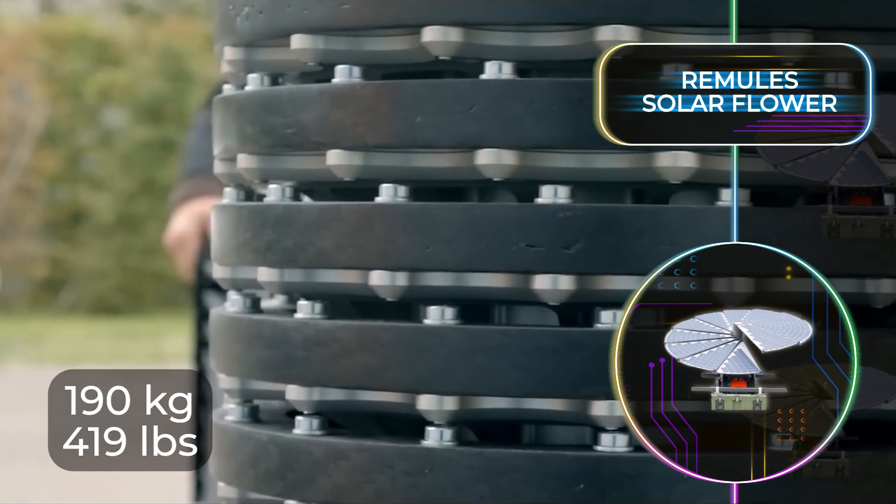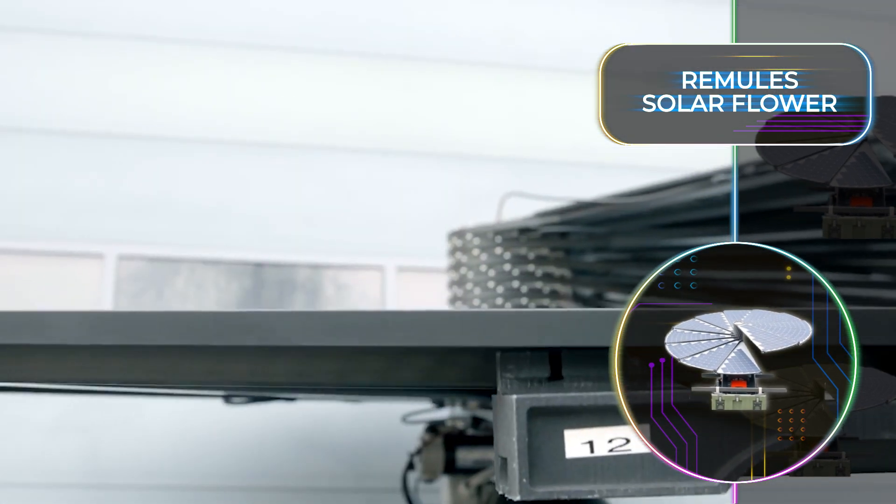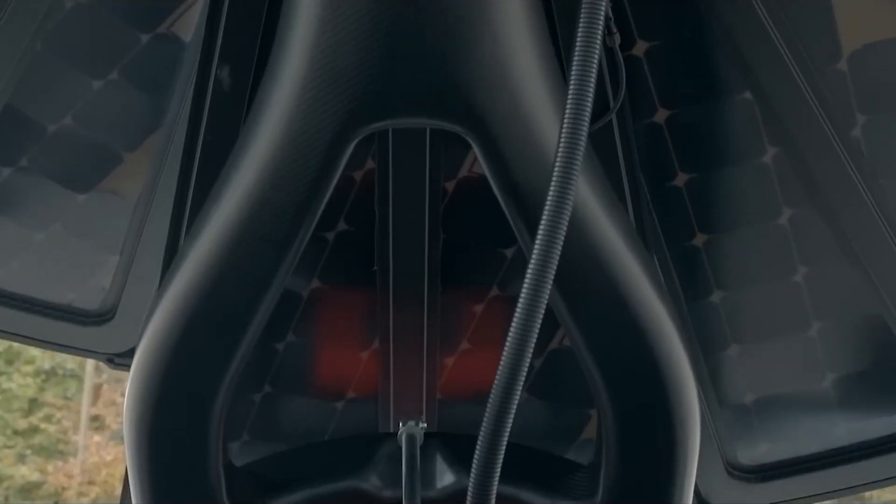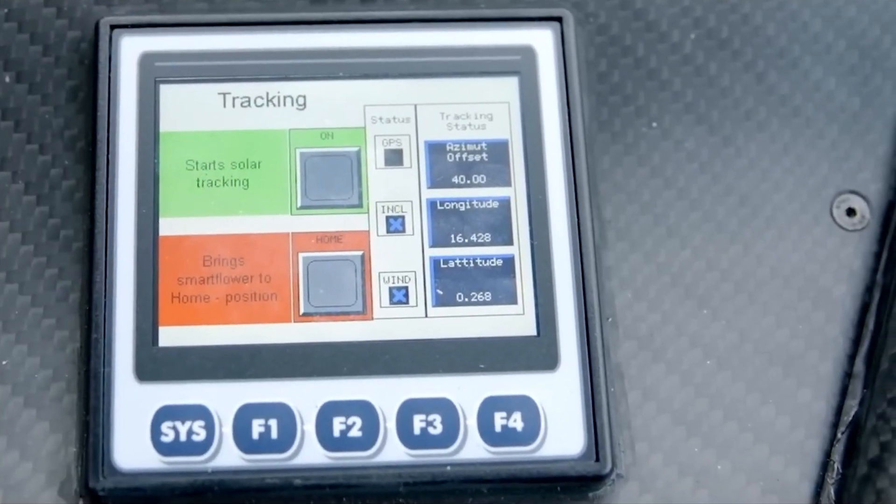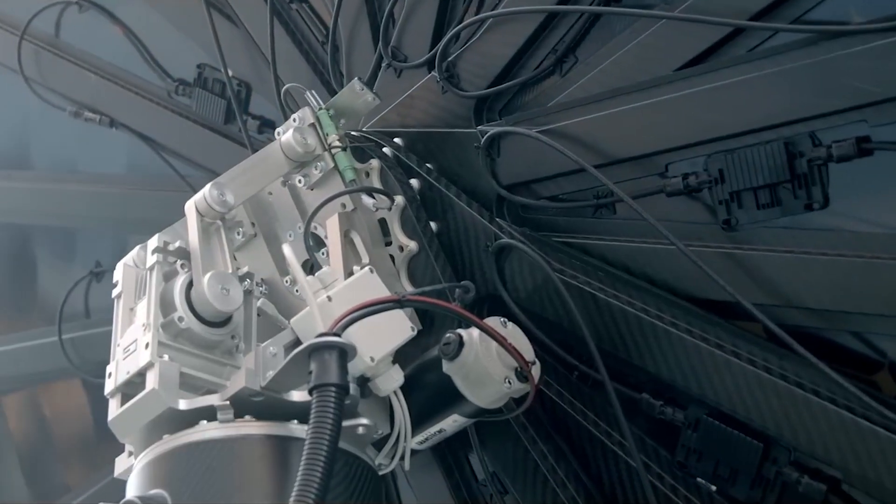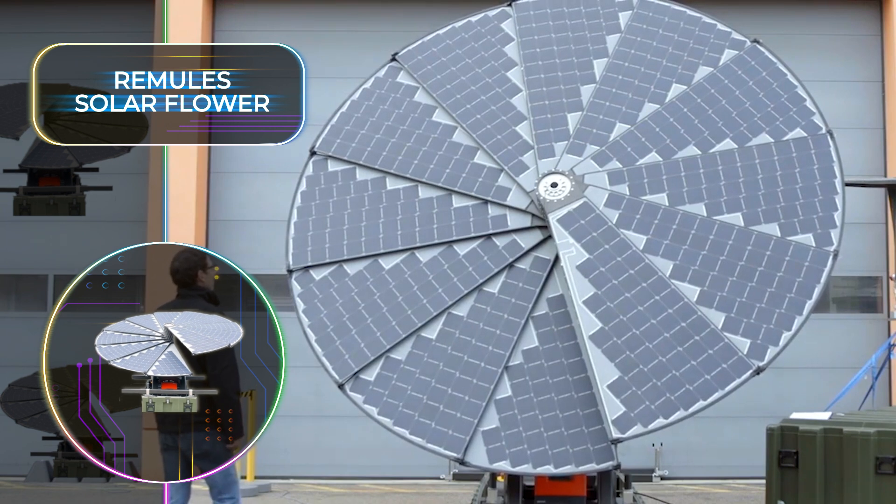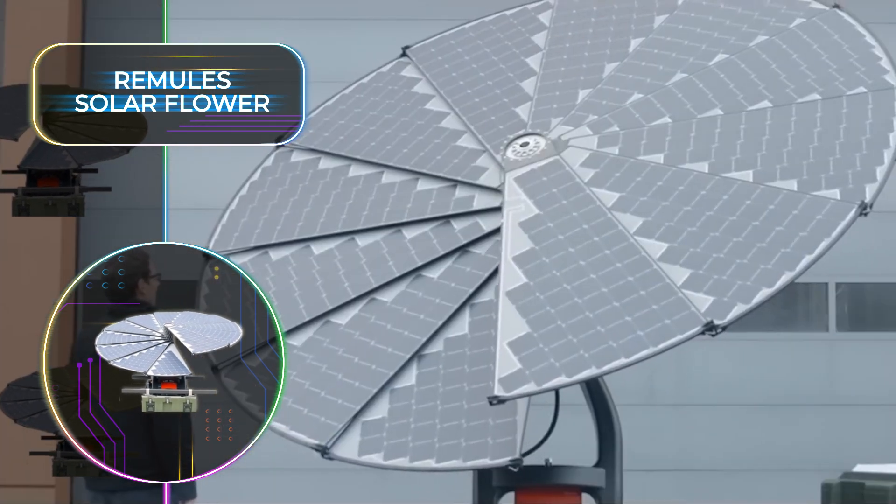Tipping the scales at 190 kilograms or 419 pounds, and crafted entirely from carbon fiber, this device proves to be a godsend for homeowners as it can be easily relocated manually. Once bundled and synced, it can intuitively alter its position to track the sun's movement courtesy of an internal GPS system. While this feature isn't unheard of, it becomes unique when applied to personal use, supplying up to 2 kilowatts of energy under optimal conditions.